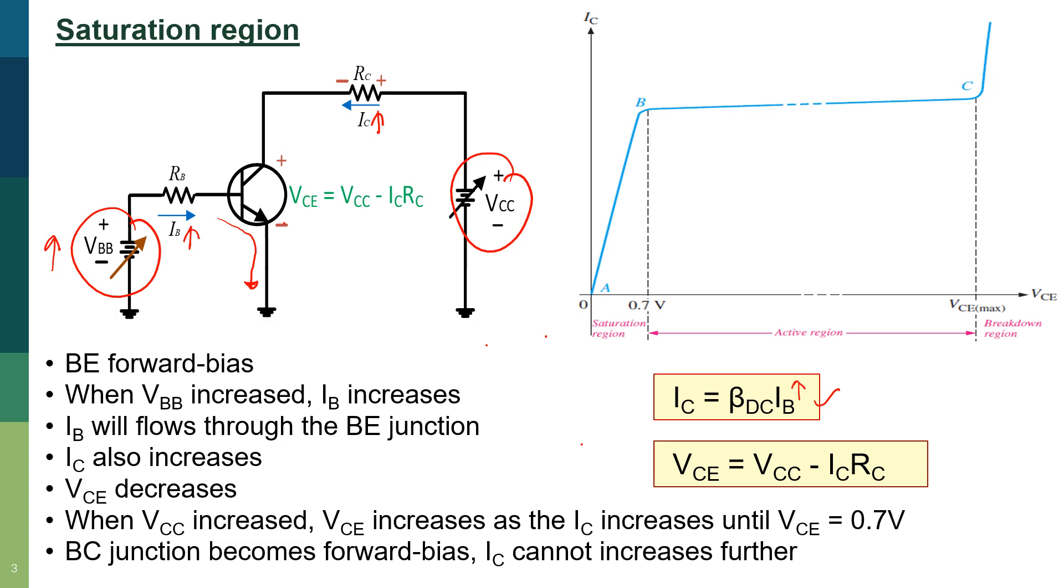So when IB is increased, IC also increases as well. This will result in VCE decreasing, as VCE equals VCC minus IC times RC. High IC will result in high voltage drop across RC. But when VCC is increased, VCE also increases as IC increases, until VCE reaches its saturation value of 0.7V.